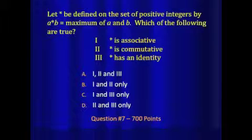Which of the following are true? Star is associative. Star is commutative. Star has an identity. Those are the three properties we're labeling 1, 2, and 3.